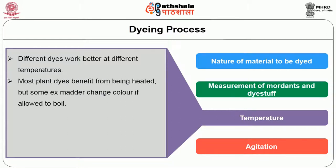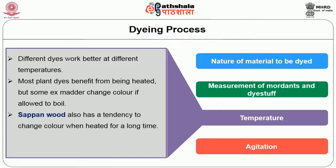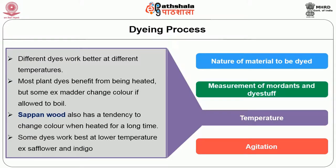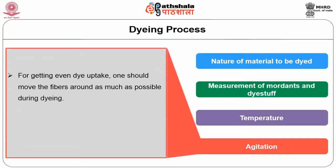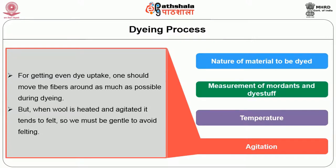Most plant dyes benefit from being heated. But some, for example madder, change colour if allowed to boil. Suppenwood also has a tendency to change colour when heated for a long time. Some dyes work best at low temperatures, for example safflower and indigo. For getting even dye uptake, one should move the fibres around as much as possible during dyeing. But when wool is heated and agitated, it tends to felt, so we must be gentle to avoid felting.